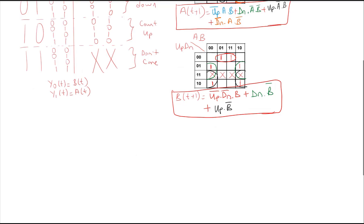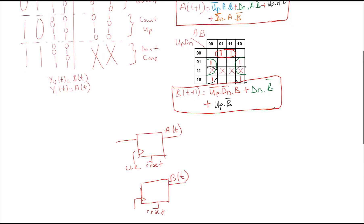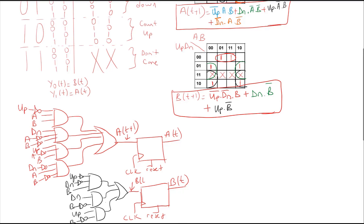Now that we have found all our equations, we can draw our schematic for the finite state machine. We have two flip-flops to store our present state AT and BT. Here is our next state logic for AT+1 and BT+1. And finally, our output logic — Y1T and Y0T. We have now completed our schematic for the finite state machine.